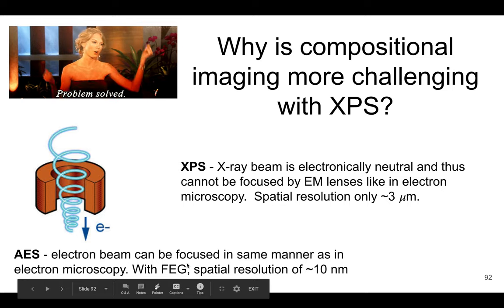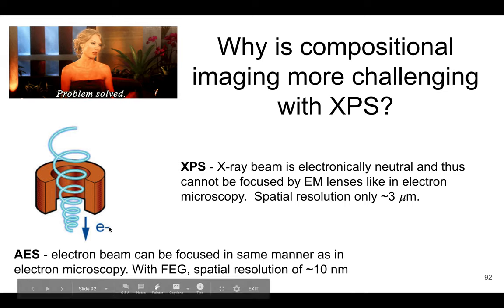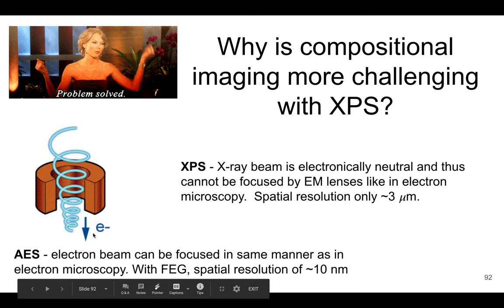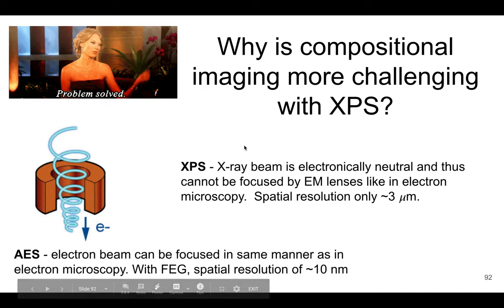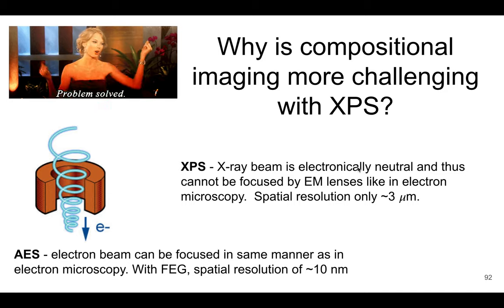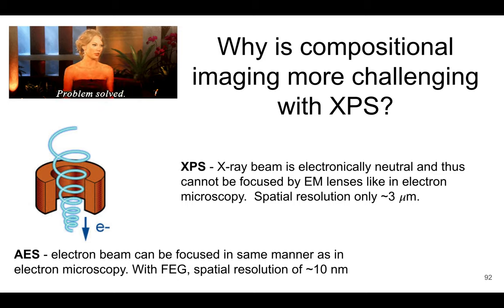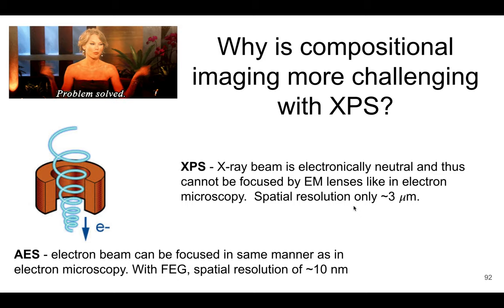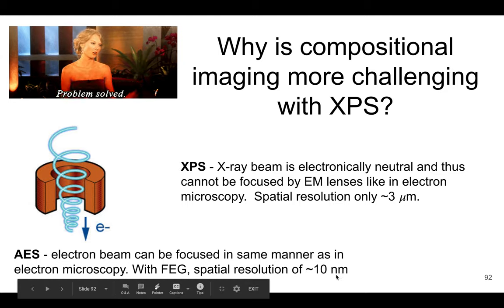Using an electron beam, we're able to focus in a similar manner to electron microscopy. With a field emission gun we can get really low spatial resolution — down to 10 nanometers — because we know how to manipulate an electron beam with lenses. However, x-rays used in XPS are electronically neutral, so those same electromagnetic lenses cannot focus x-rays the way they can with AES. Because we can't control x-rays as well to produce a very small beam, our spatial resolution is about 3 microns — compared to 10 nanometers with AES.